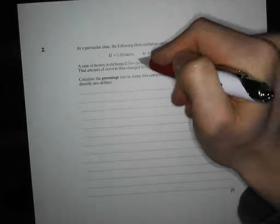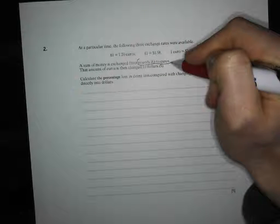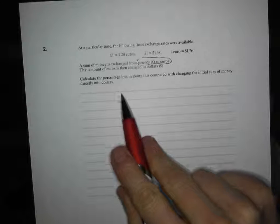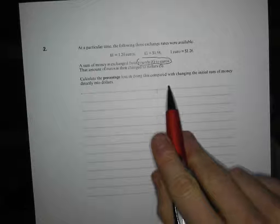Here it goes. A sum of money is exchanged from pounds to euros. So that's the first thing that's happening, pounds to euros. And then from euros, it's changed into dollars.